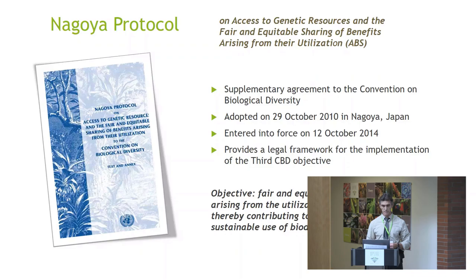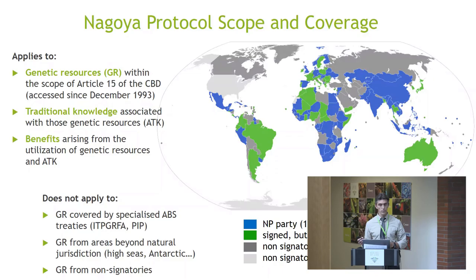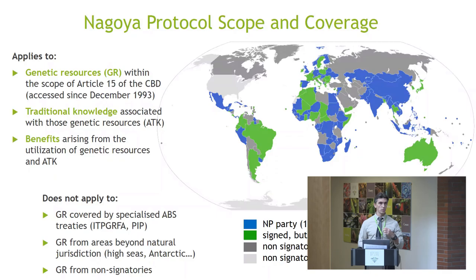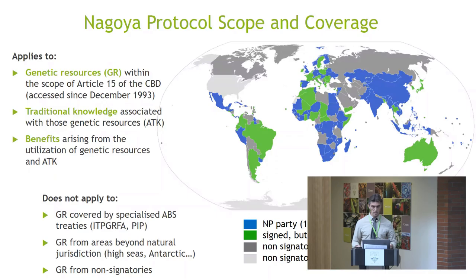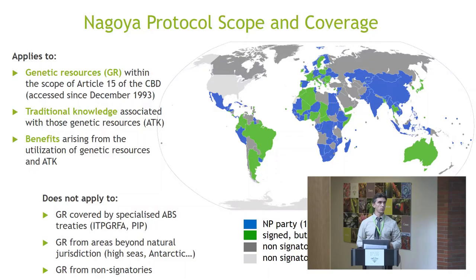There is some ambiguity around the different definitions. The Nagoya Protocol applies to genetic resources within the scope of Article 15 of the convention. It also applies to traditional knowledge associated with these resources and to benefits arising from their utilization. It does not apply to genetic resources covered under other specialized treaties — though that is a matter of debate — nor to genetic resources from areas beyond national jurisdiction, nor to genetic resources from non-signatory parties.